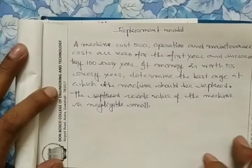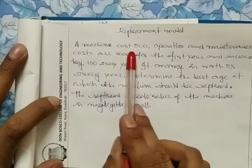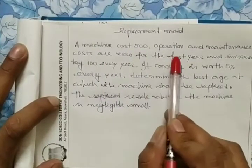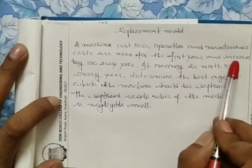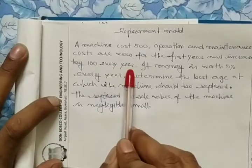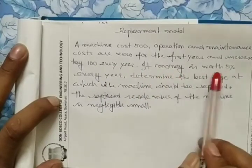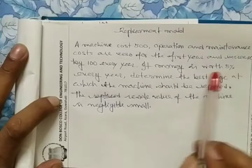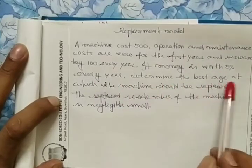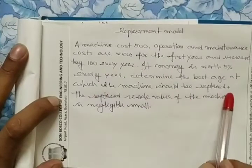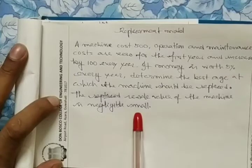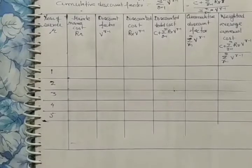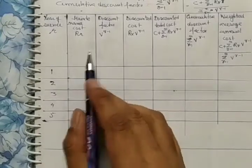Let's consider one numerical. A machine costs 500. Operating and maintenance costs are 0 for the first year and increase by 100 every year. If money is worth 5% per year, determine the best age at which the machine should be replaced. The resale value of the machine is negligibly small.